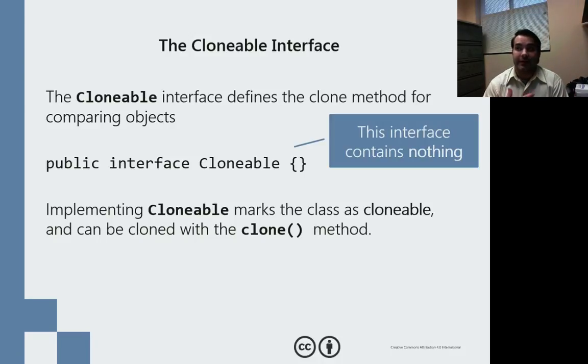Just like we had the comparable interface, we also have the cloneable interface. The cloneable interface does not actually give us any methods to overwrite, but what it does give us access to is the clone method. It makes our objects cloneable.